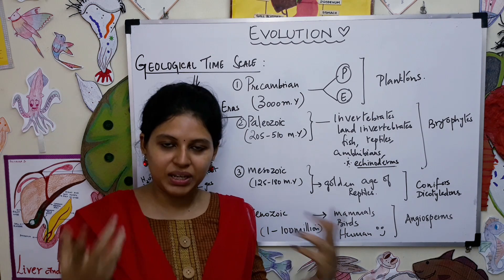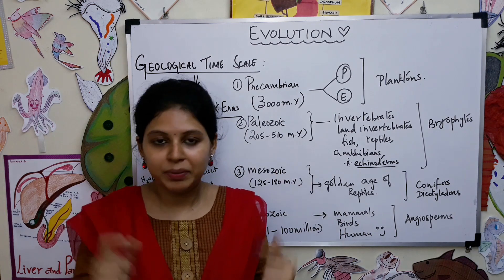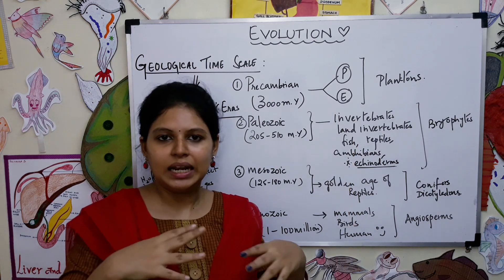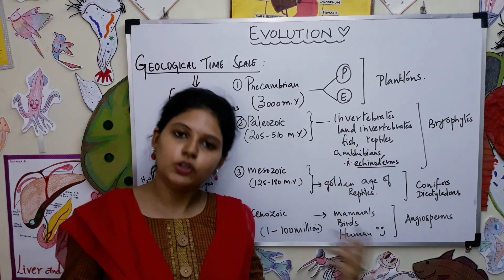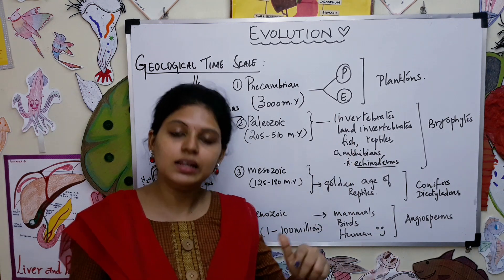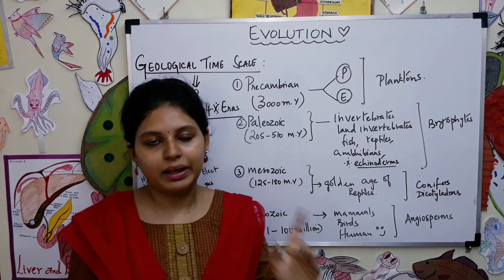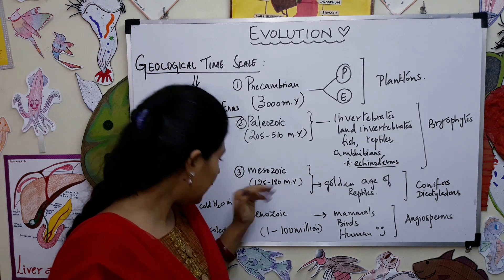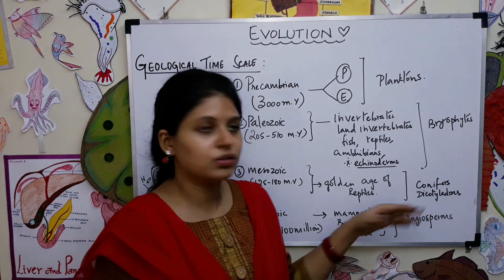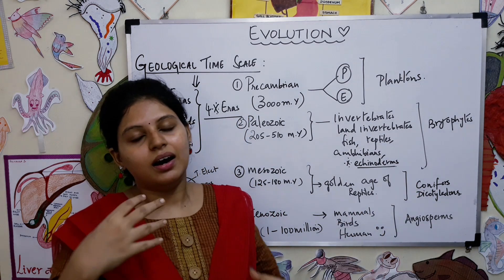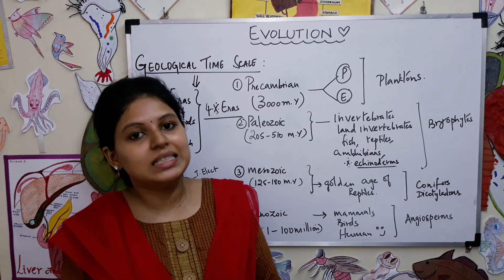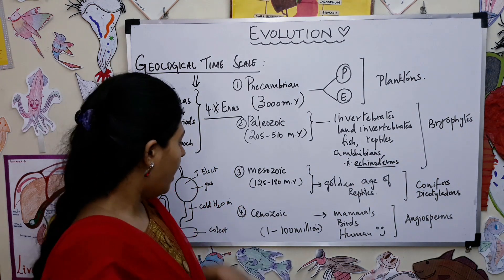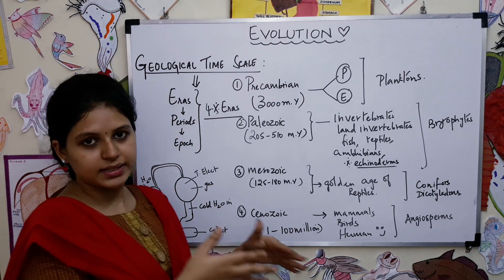How dinosaurs became extinct is still a big question mark. People believe a meteor hit the earth and caused their extinction, but there could be various other reasons too. Also in the Mesozoic era, conifers, pine trees, and gymnosperms — naked-seeded plants — all evolved.